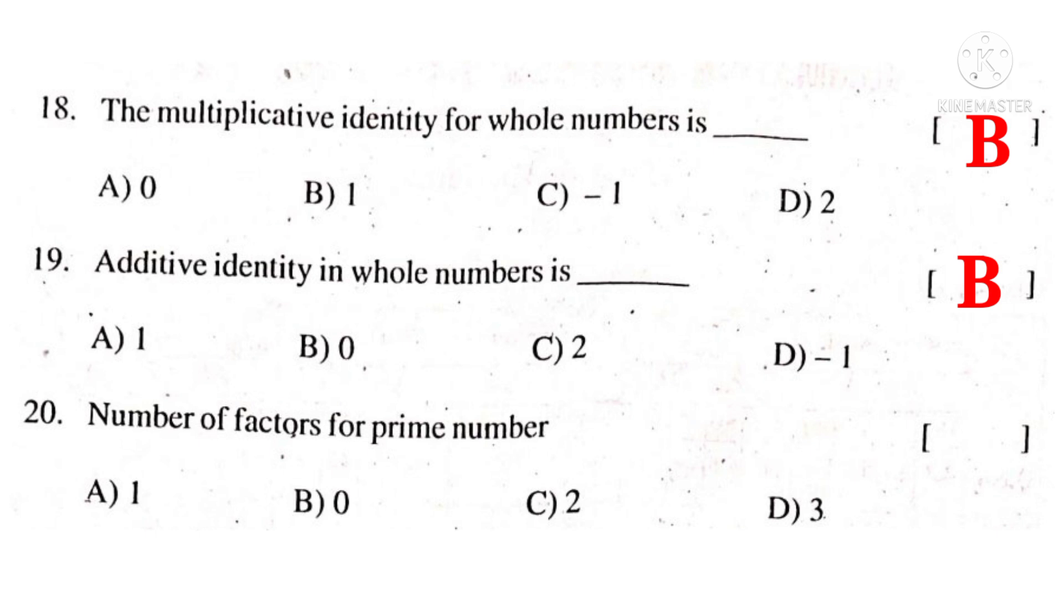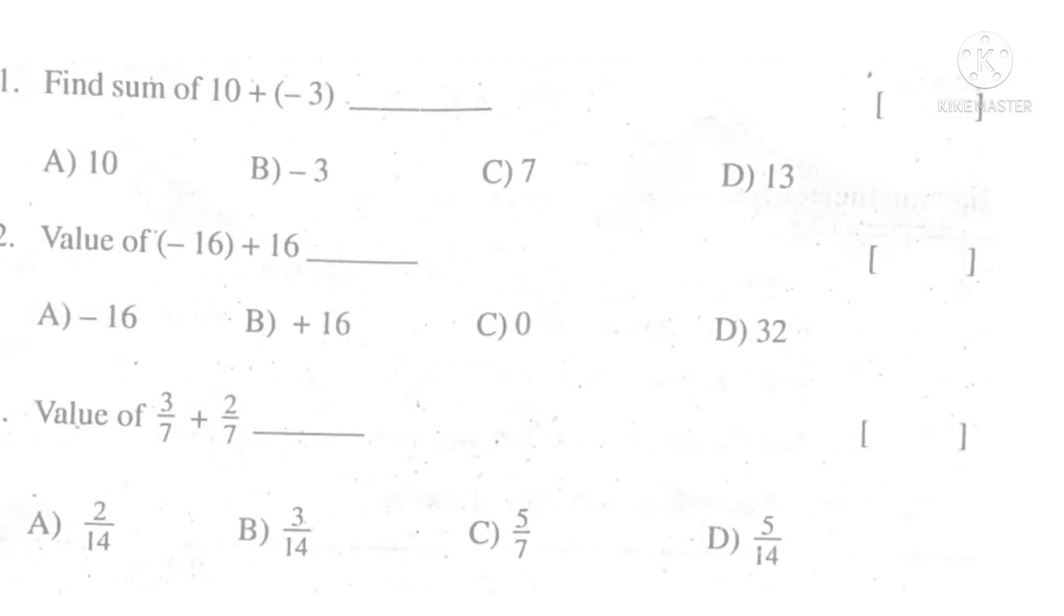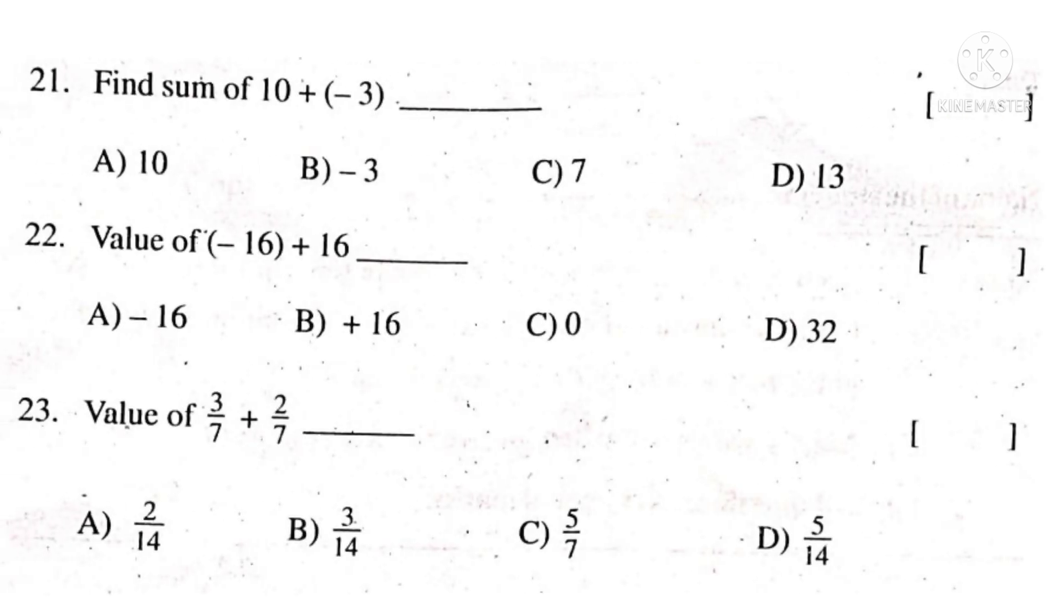Number of factors for prime number is - a prime number is divisible by 1 and itself, so there are only two factors. The correct choice is C. 21st bit: Find the sum of 10 plus minus 3. That means 10 minus 3 which is equal to 7. The correct choice is C.